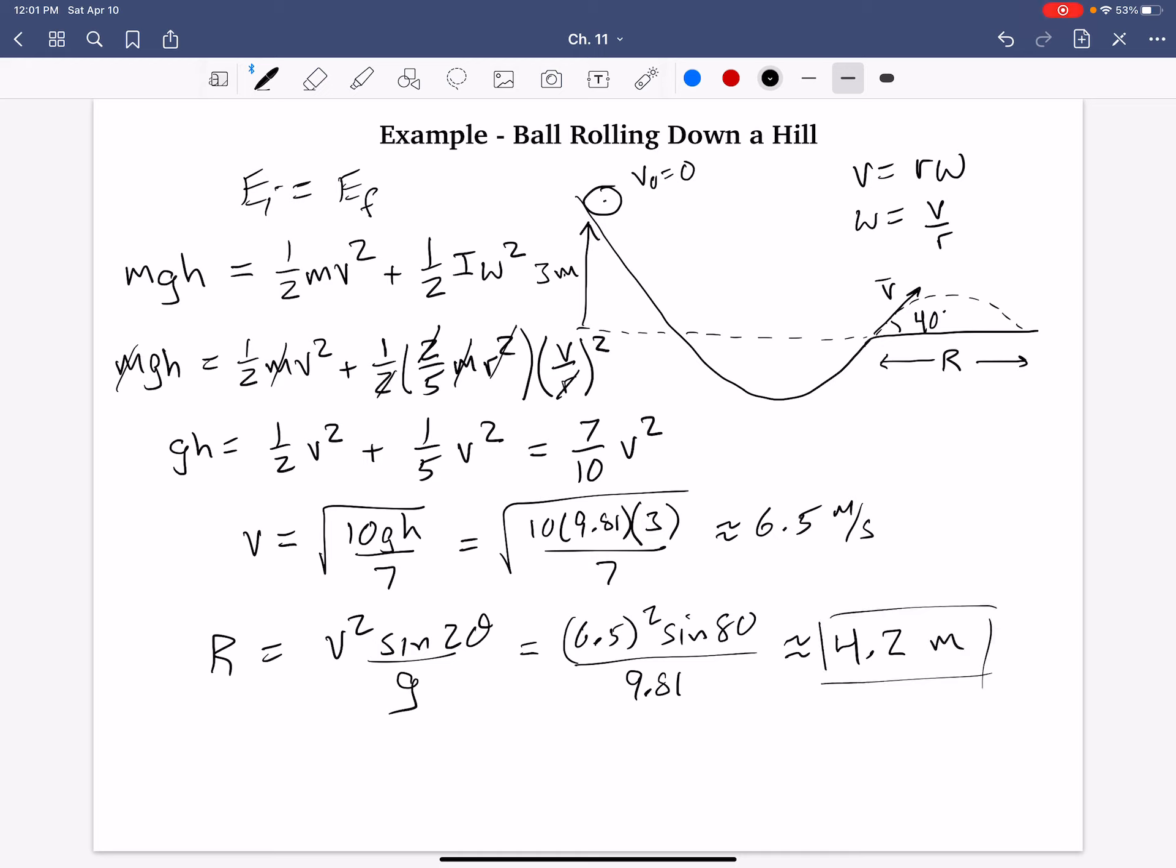And so, again, the size of this ball, assuming a uniform density, does not matter. It cancels out. I've always found that pretty interesting. But, this is how we now incorporate rotational kinetic energy into our conservation of energy problems for an object rolling. Thanks for watching.